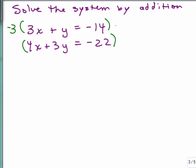If I multiply the top by negative 3 then I'll have a negative 3y and a positive 3y. So here's how you do the same problem using the addition method. Multiplying the top equation by negative 3 and doing nothing with the bottom equation gives negative 9x minus 3y equals positive 42. It's very important to remember to multiply negative 3 by the negative 14.